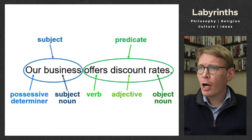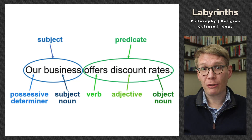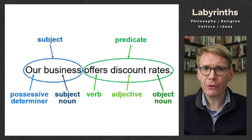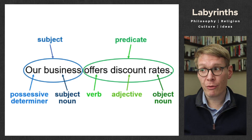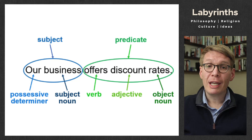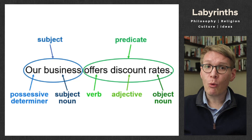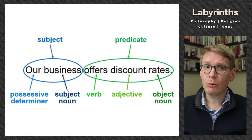Take this example: 'Our business offers discount rates.' Here you have the subject phrase 'our business.' All the information 'offers discount rates' makes up together the predicate. It includes the verb 'offers,' the object noun 'rates,' and also an adjective 'discount,' which modifies 'rates' and tells us what kind of rates the business offers. You can divide this into subject, verb, object, or into subject and predicate. All of this is going to be important when we get to logic, which is why we're covering it now.